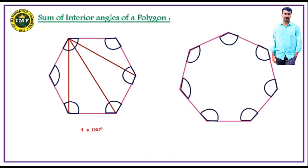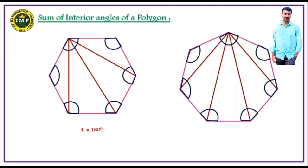Here I have drawn a seven-sided polygon with its interior angles marked. Using the same idea, I draw the diagonals from one vertex to all other vertices. Now the whole seven-sided polygon is divided into five triangles. The sum of all angles of these five triangles equals the sum of the interior angles of this polygon. Since there are five triangles, 5 × 180° will be the sum of the interior angles of the seven-sided polygon, which is two less than seven.